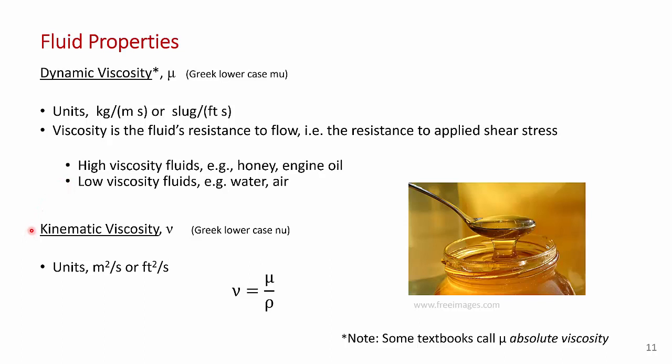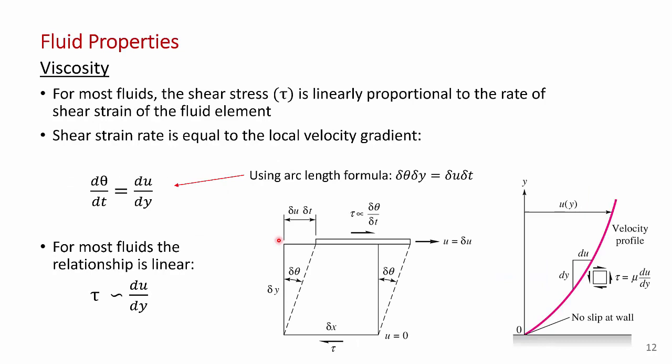There's another type of viscosity called kinematic viscosity, which comes up occasionally in the mathematics. Kinematic viscosity is just dynamic viscosity divided by density. It has units of meters squared per second or feet squared per second, and it's represented by the lowercase Greek letter nu. Most of the time we'll be dealing with dynamic viscosity, mu.